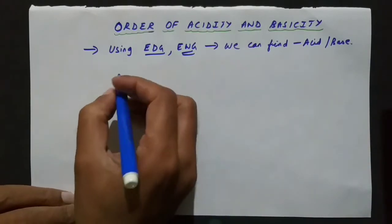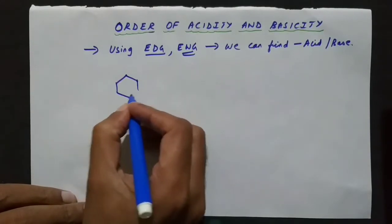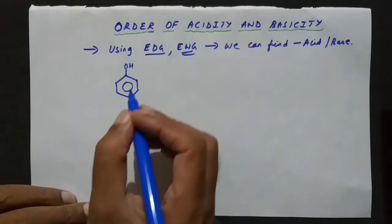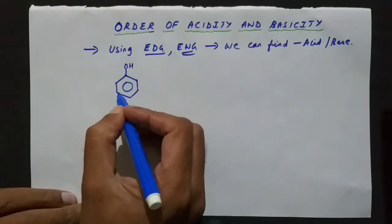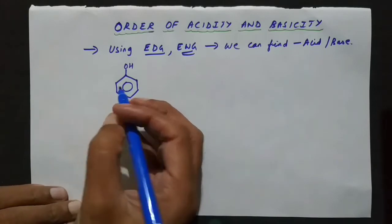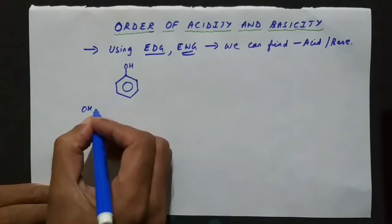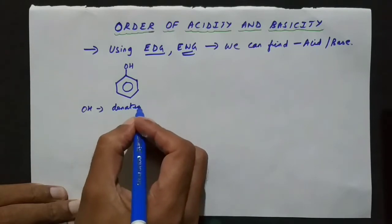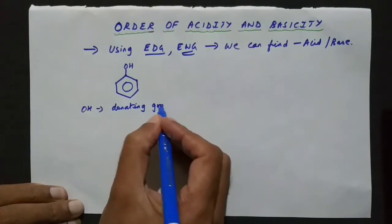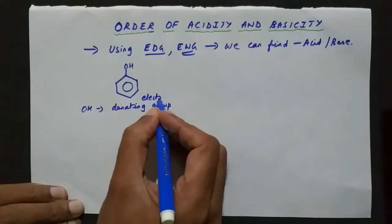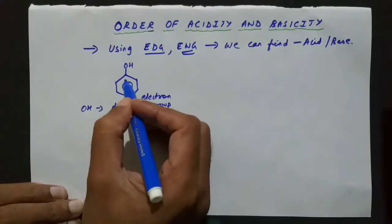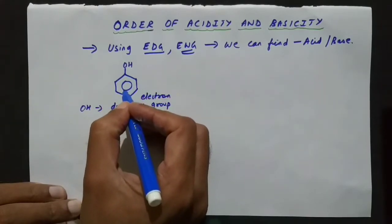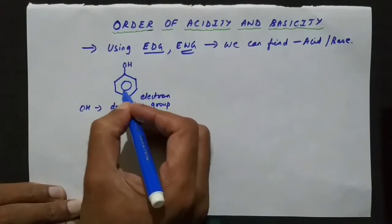Let me take benzene as a compound. When we attach an OH group to benzene, as we discussed in previous videos, OH is an electron-donating group — a very strong electron-donating group. Because it is a very strong electron-donating group, the benzene ring will receive the electrons and become electron-rich.